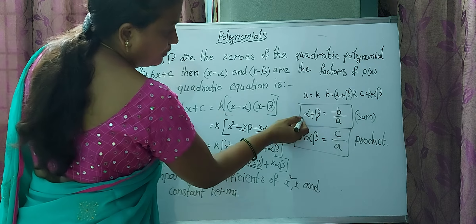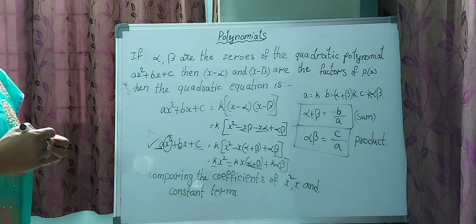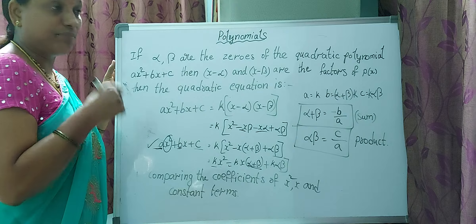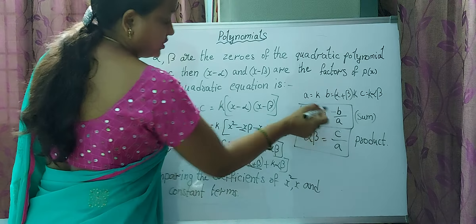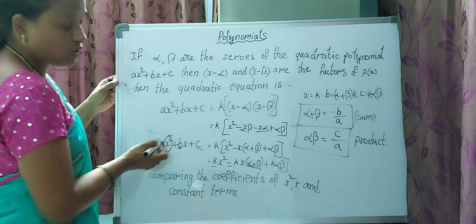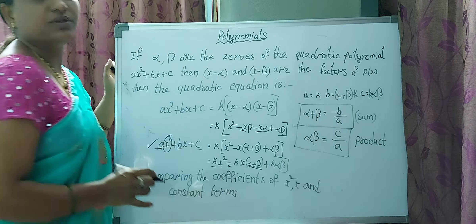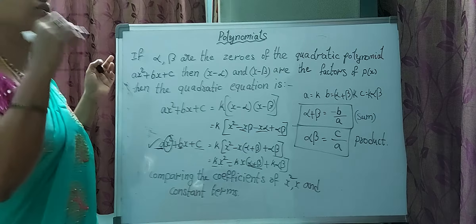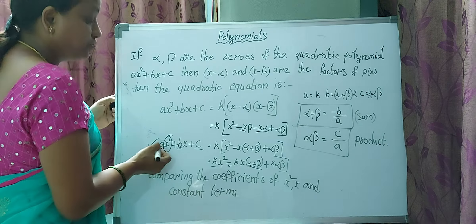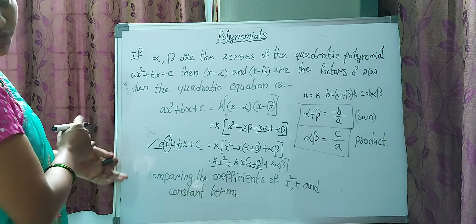Now, how to find the sum of zeros: alpha + beta equals minus the coefficient of x divided by the coefficient of x², which is -b/a. Just remember: minus b by a. We already discussed this yesterday when comparing coefficients.